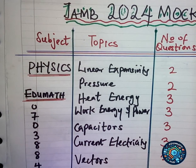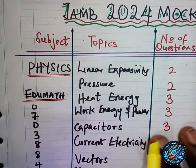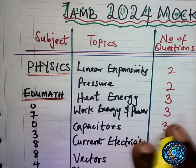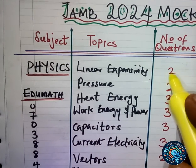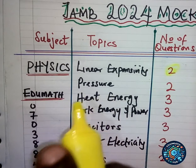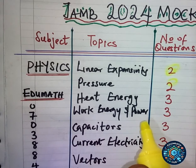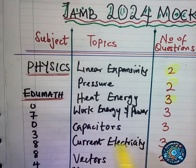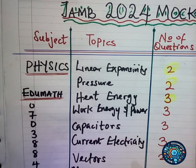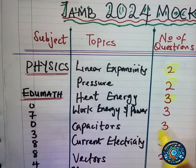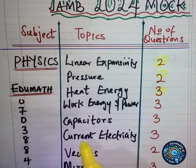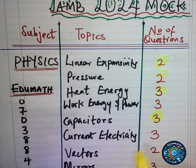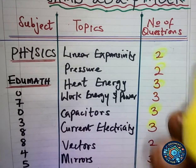This is the breakdown for physics in the 2024 mock examination. Topics are on the left, number of questions on the right. Under linear expansivity, two questions came out. Under pressure, two questions. Under heat energy — which is very wide, and linear expansivity is actually a subtopic of it — three questions came out. Work, energy and power had three questions. Capacitors, which falls under electricity, had three questions covering electrostatics and charges.